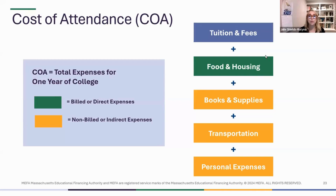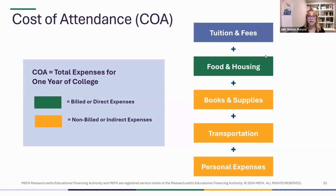They come up with a full cost of attendance, which includes tuition and fees, food and housing, books and supplies, transportation, and personal expenses. Some of these are billed expenses and some are non-billed, but a student will need that much money to attend for the year. The college comes up with that cost of attendance each year.